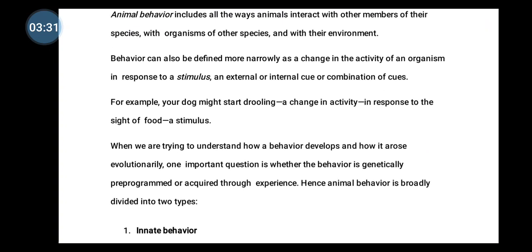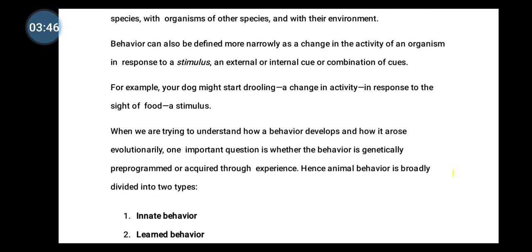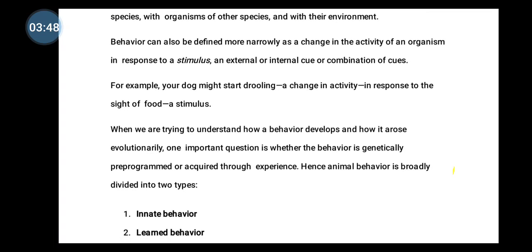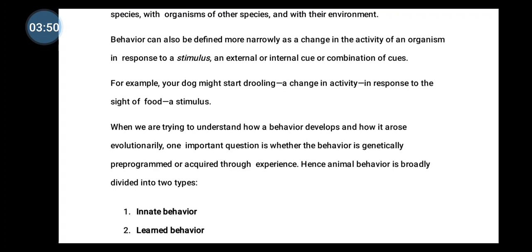When trying to understand how a behavior develops and how it arose evolutionarily, one important question is whether the behavior is genetically pre-programmed or acquired through experience. Hence, animal behavior is broadly divided into two types: the first is innate behavior and the second is learned behavior.